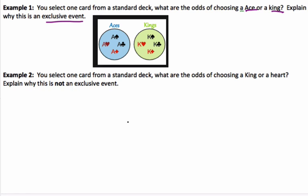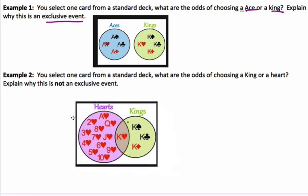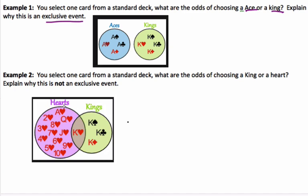Now if I select one card from a standard deck, what are the odds of choosing a King or a Heart? Well, consider this scenario. Here are all the Hearts that are possible, here are all the Kings that are possible. This region in the middle is an overlap, and a King of Hearts is in both. So these are not mutually exclusive events, because this event of King and Heart can happen at the same time.